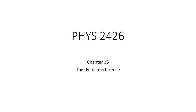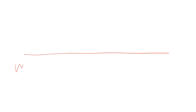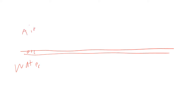Our next topic looks at interference from thin films. Imagine you have a layer of oil on water — we have water, a thin layer of oil, and then air up here. The oil layer has some thickness L. As light hits any surface it tends to reflect; some of the light goes through, hits the next surface and reflects. These two reflections are now out of phase.